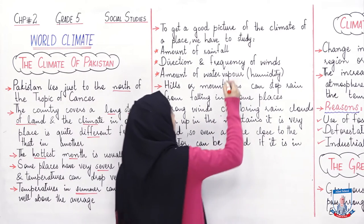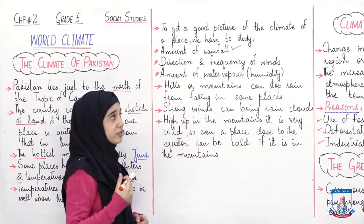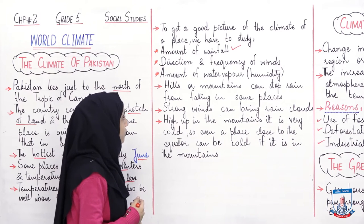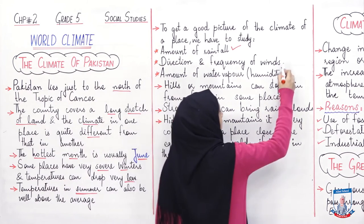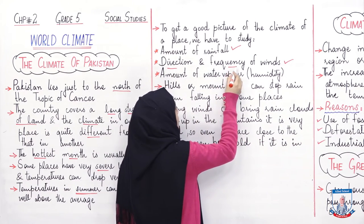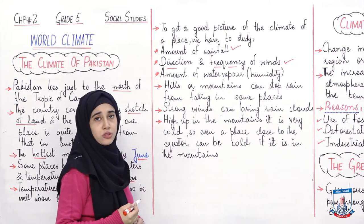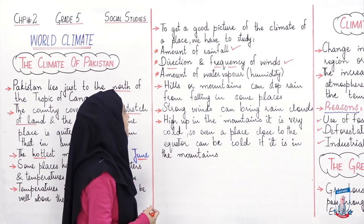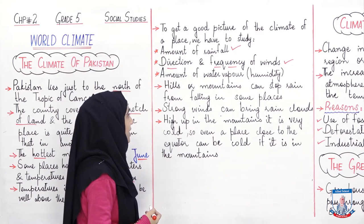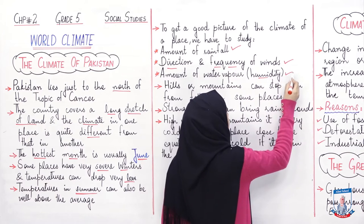The amount of rainfall — that is, how much rain falls in that region or area. The direction and frequency of winds — what direction the wind is blowing, how much pressure there is, and how frequent the winds are. And then the amount of water vapors — how much humidity and water vapor is in the wind.